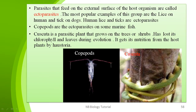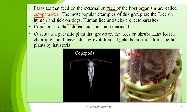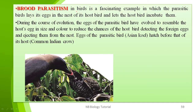Some parasites feed on the external surface of the host organism — these are called ectoparasites. Common examples are lice on humans and ticks on dogs. Copepods grow on some marine fish. Cuscuta is also a parasite that grows on the surface of trees or shrubs. It has lost its chlorophyll and leaves during evolution, and obtains its nutrition from the host plant by means of haustoria.